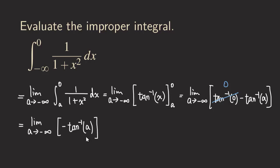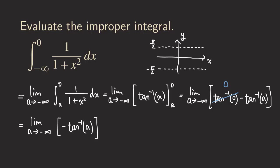It's a good idea to draw a tiny sketch of the tangent inverse function to see the limit. The arctan function has two horizontal asymptotes: y = π/2 and y = −π/2. When a is approaching negative infinity, we look at that end of the curve, and the tangent inverse function approaches −π/2. So the limit is −π/2.